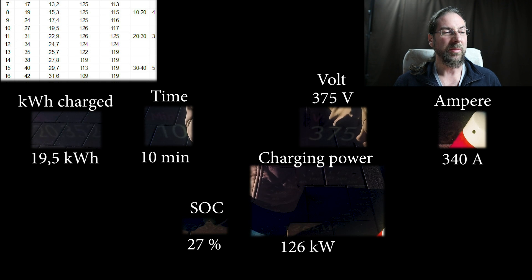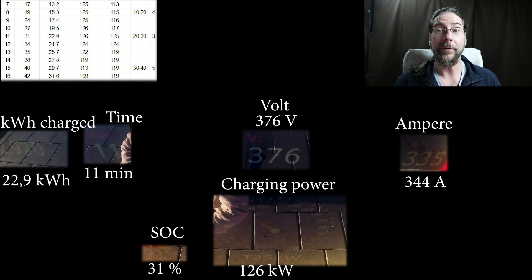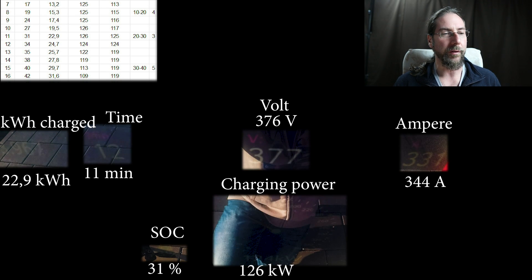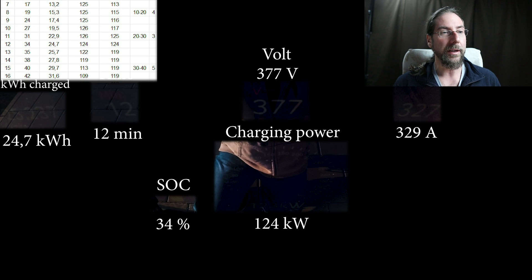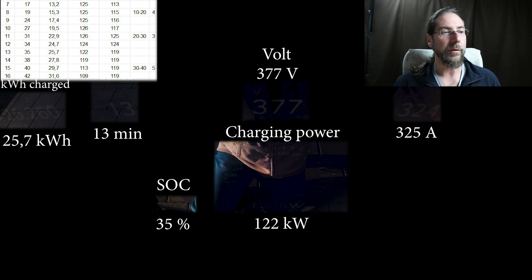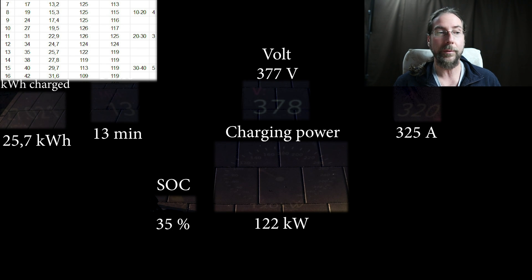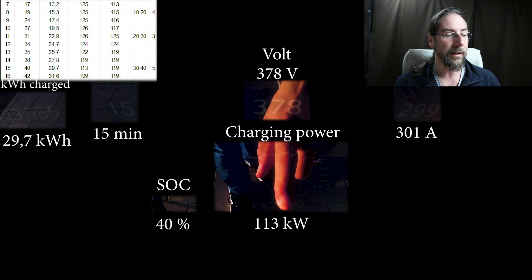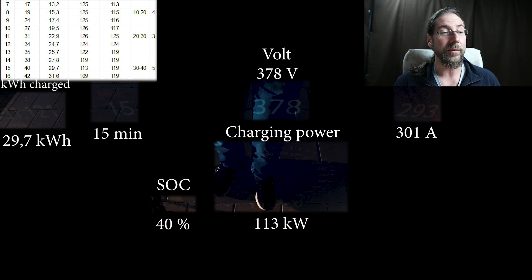27%, 10 minutes, 126 kilowatts now, and that stayed just for a bit, but still. Then it goes down, 124, 377 volts, the amps of course go down. After 13 minutes, 25.7 kilowatt hours charged. The 20 to 30 percent took only three minutes and 30 to 40 will take five minutes because it's getting slower a bit. As you can see now, 119 kilowatts.